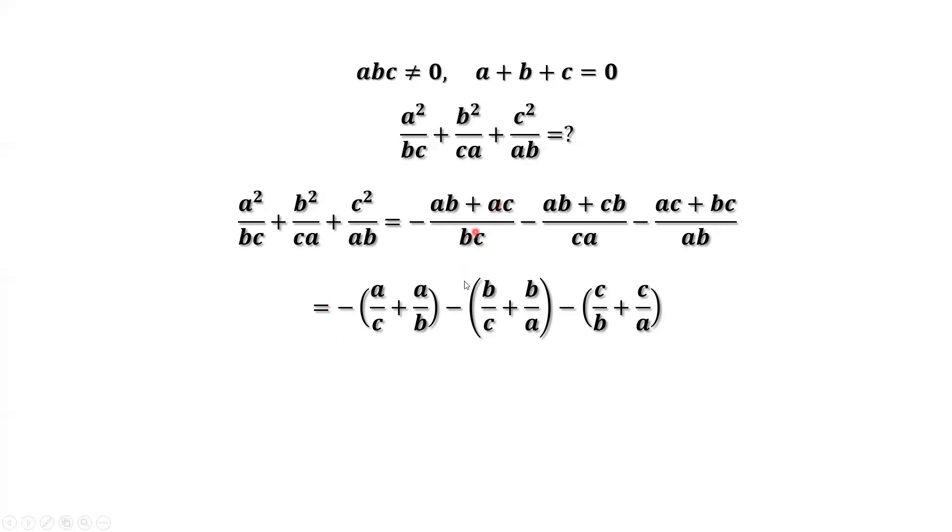Similarly here, cancel A. We have B over C. And here, that's C. Cancel. That's B over A. Similarly, we have here C over A and C over B.